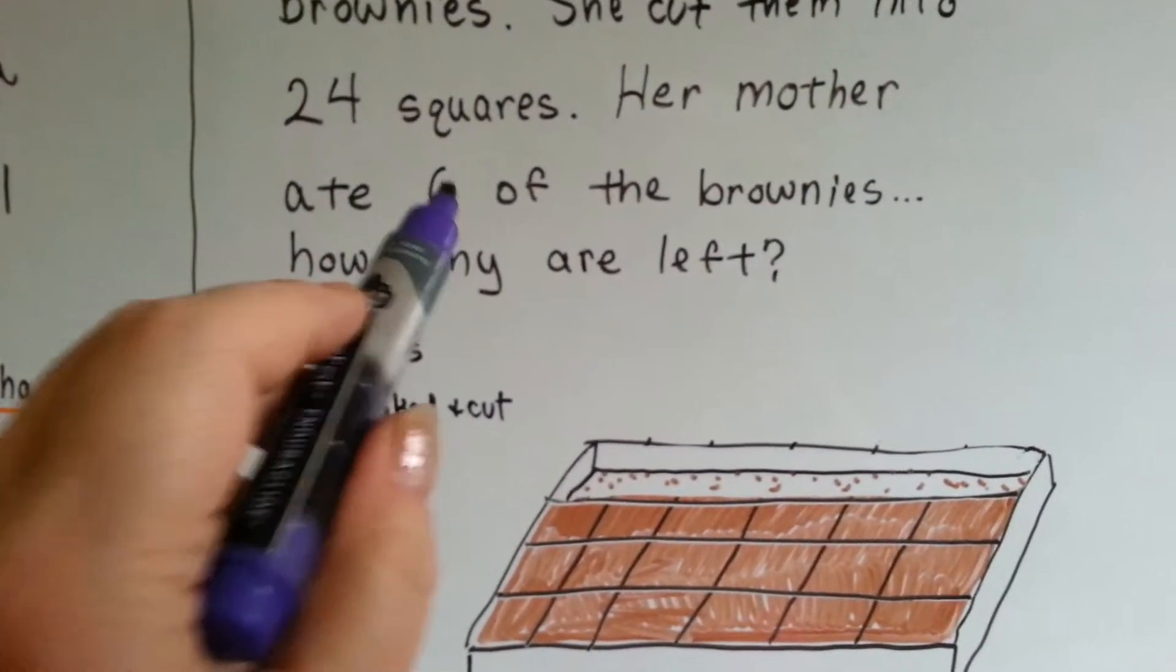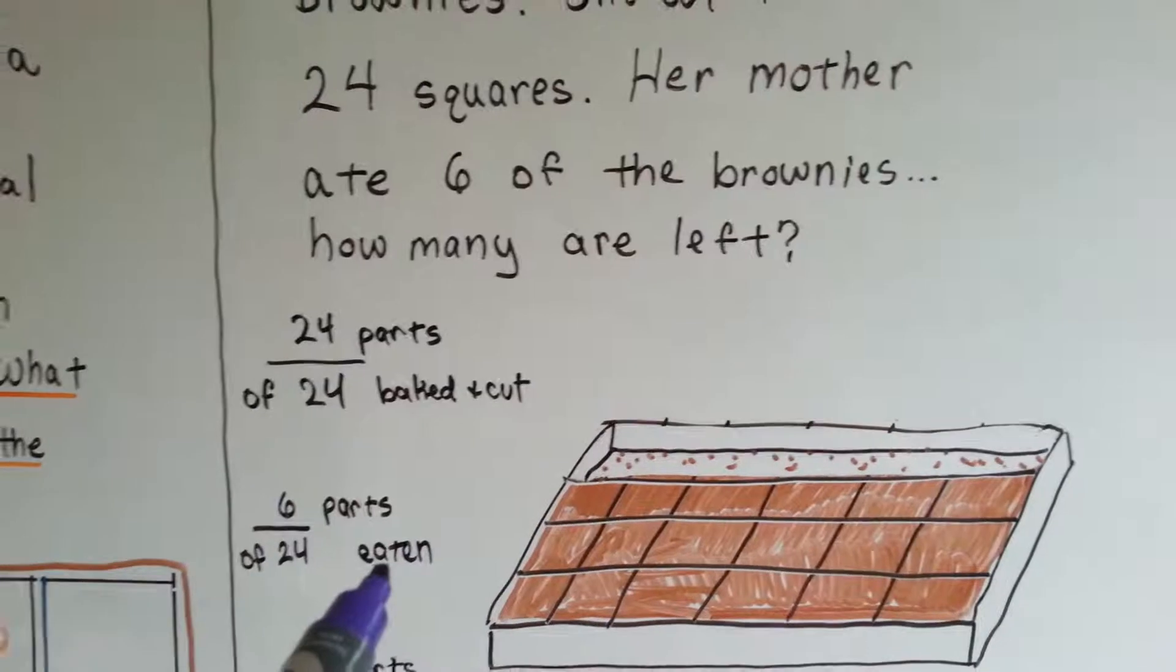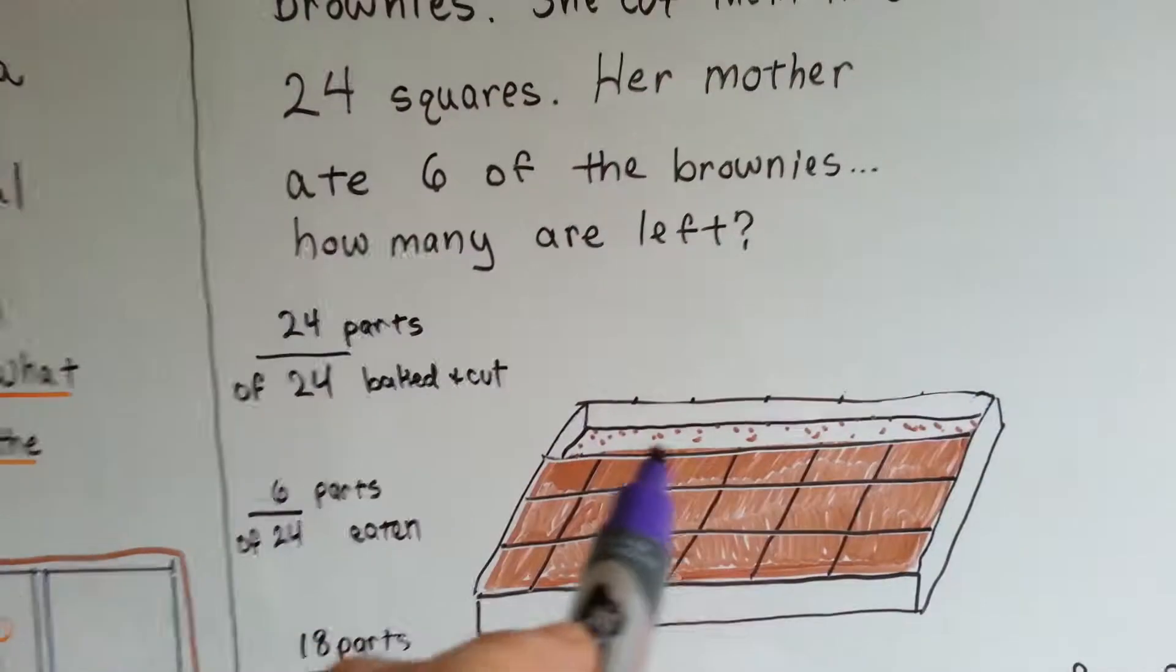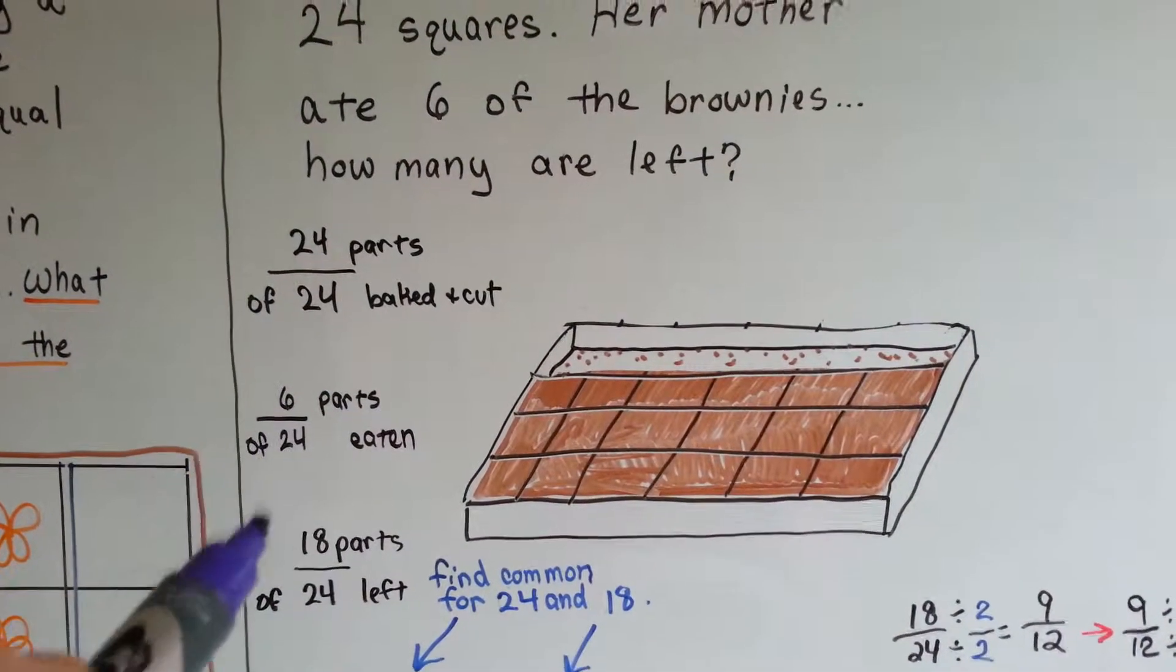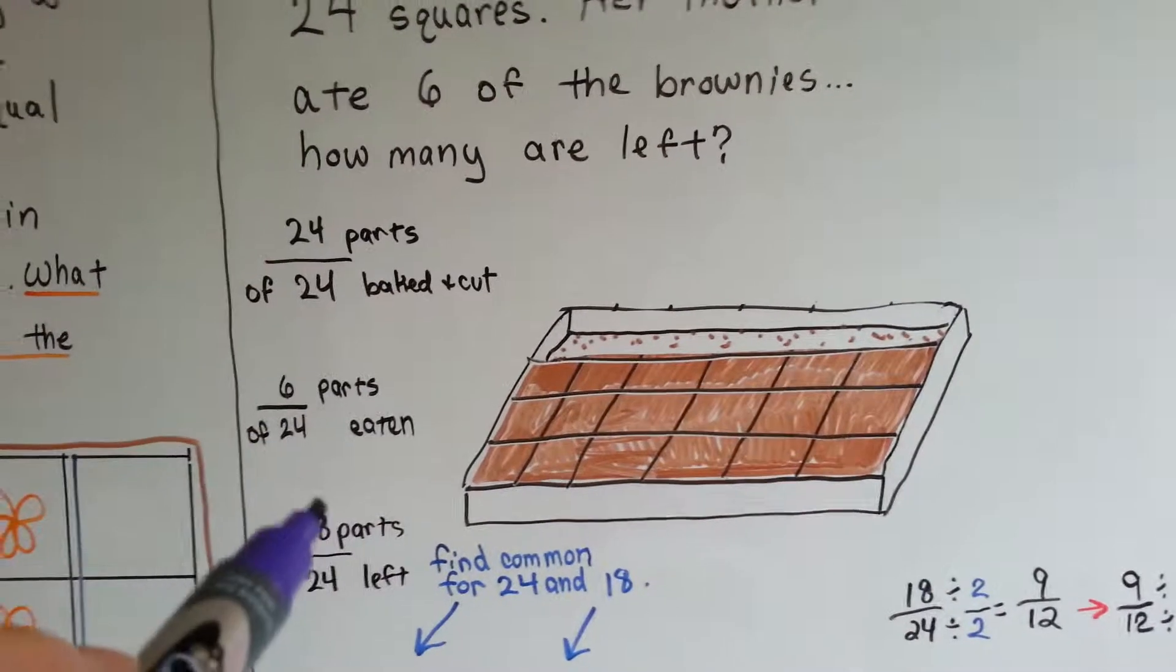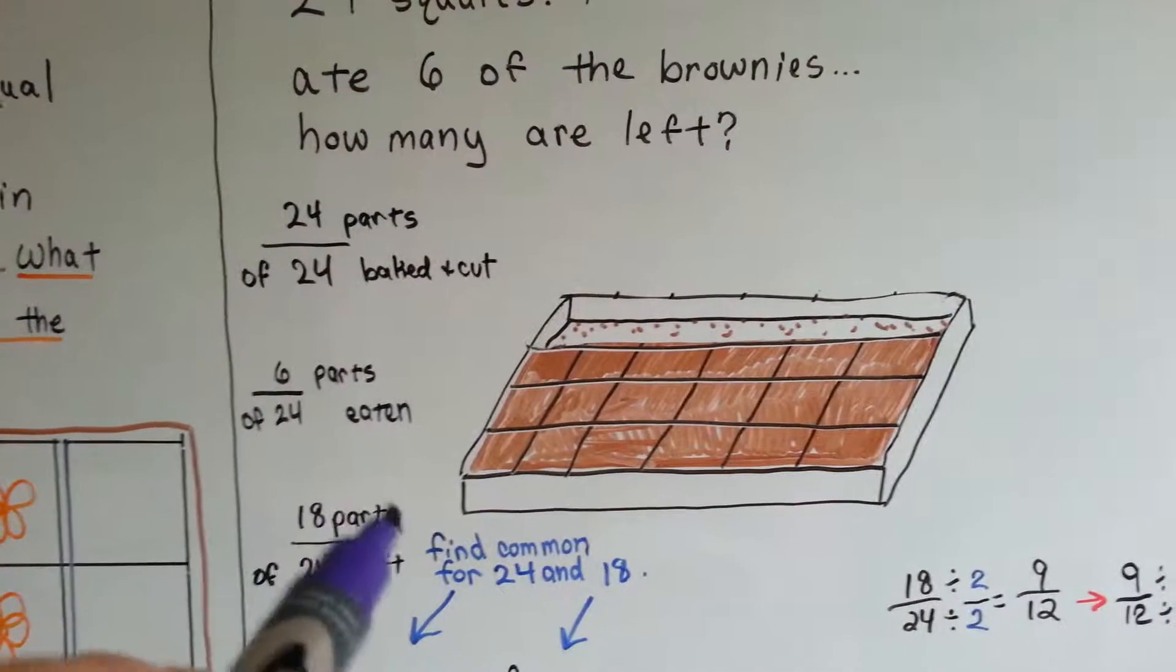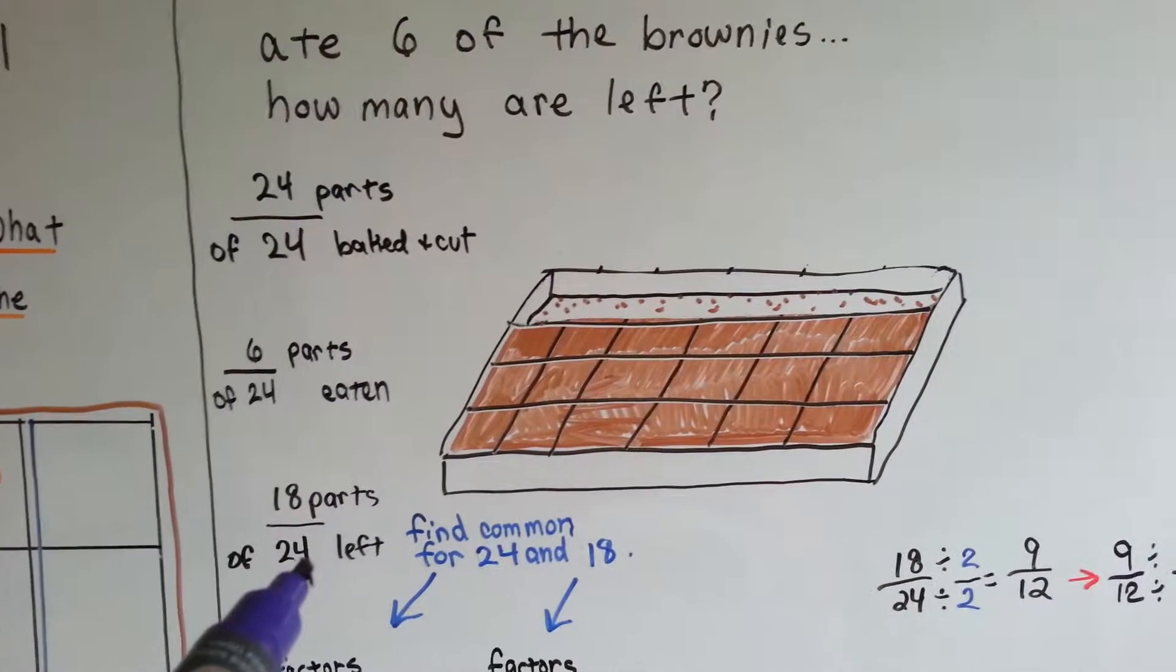How many are left? Well, originally we had twenty-four parts of the twenty-four that she baked and cut, right? Twenty-four out of the twenty-four is the whole pan. Six parts of the twenty-four were eaten. Six twenty-fourths were eaten. The six are missing. There's just crumbs left. How many are left? Well, when you subtract six from twenty-four, you get eighteen. So we know that eighteen parts of the twenty-four are left. Eighteen twenty-fourths.